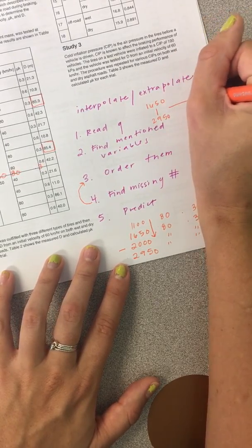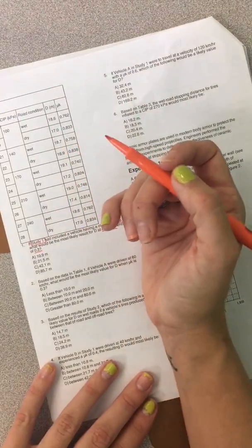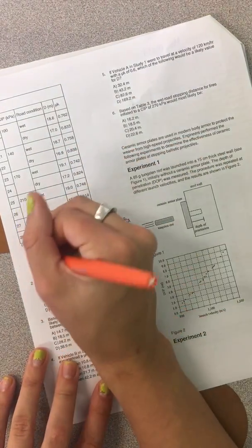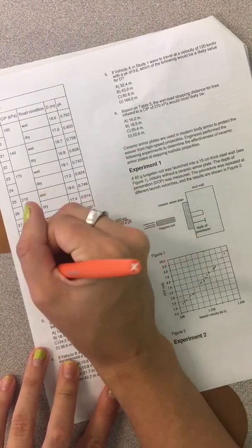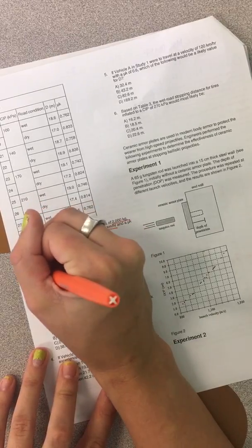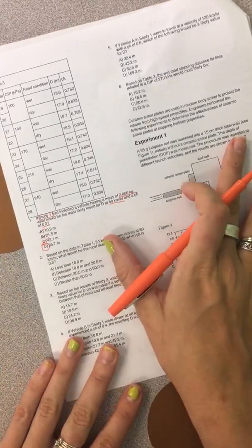Now, because 2000 fits in between 1650 and 2950, then my stopping distance is going to be between 85.4 and 86.1. And that's what I'm looking for. So we ordered them, and we find where it fits. So 10.9, no, no, no. So my only option for number one is D.